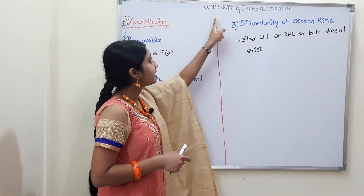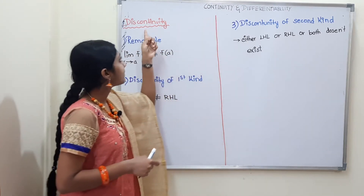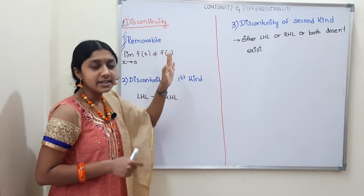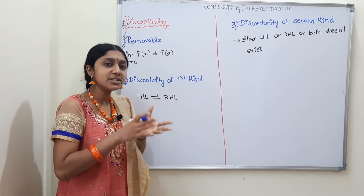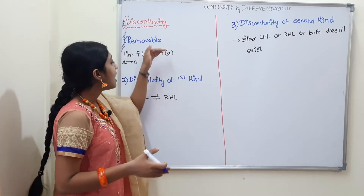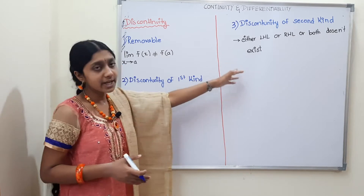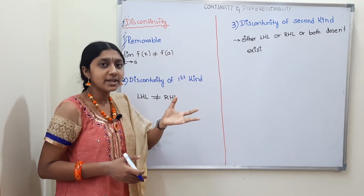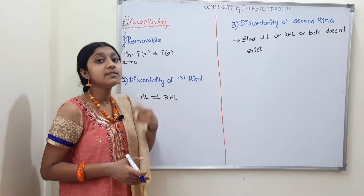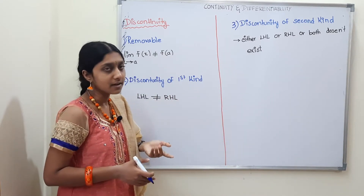In continuity, this topic is Discontinuity. For example, a function is discontinuous. There are three types — three different ways a function can be discontinuous.